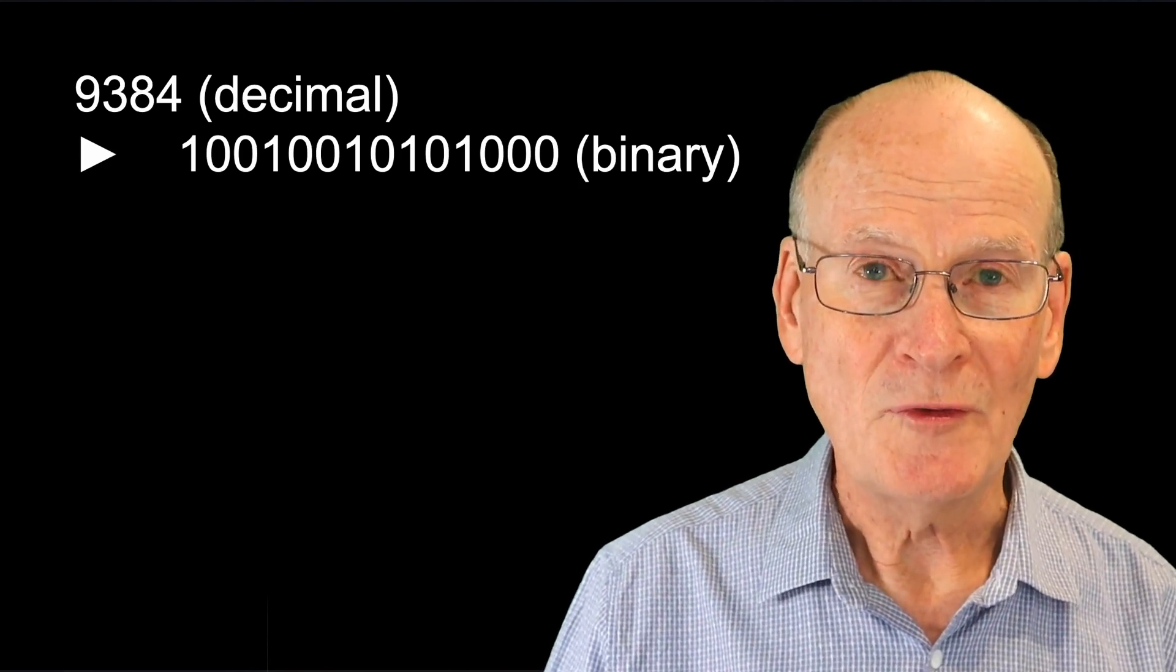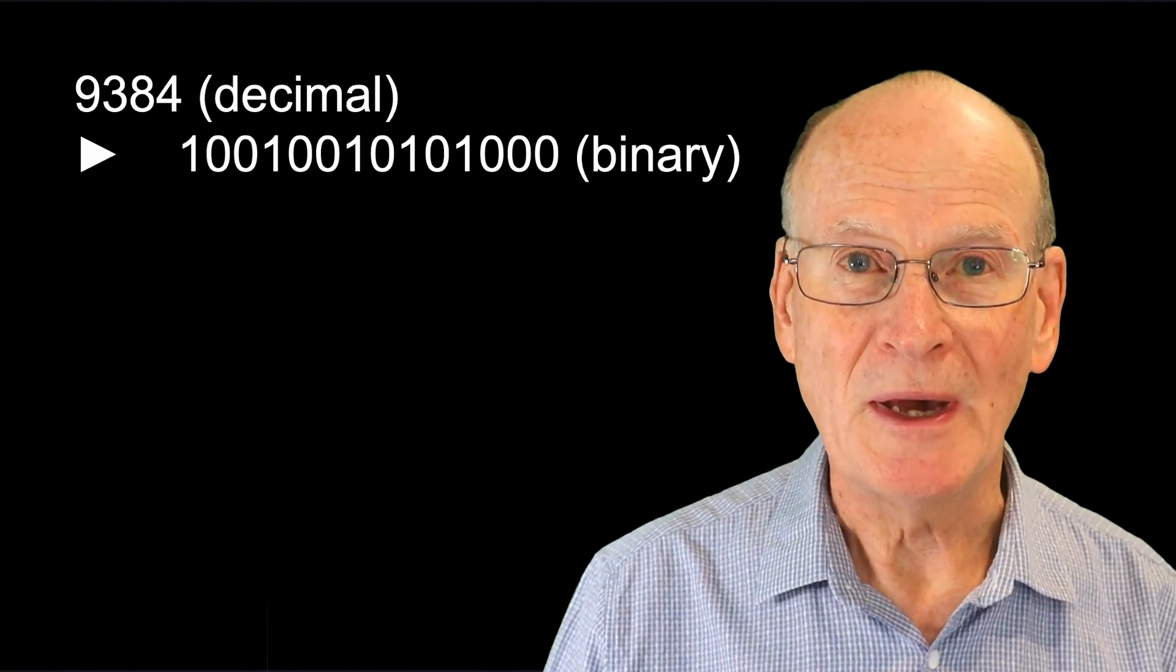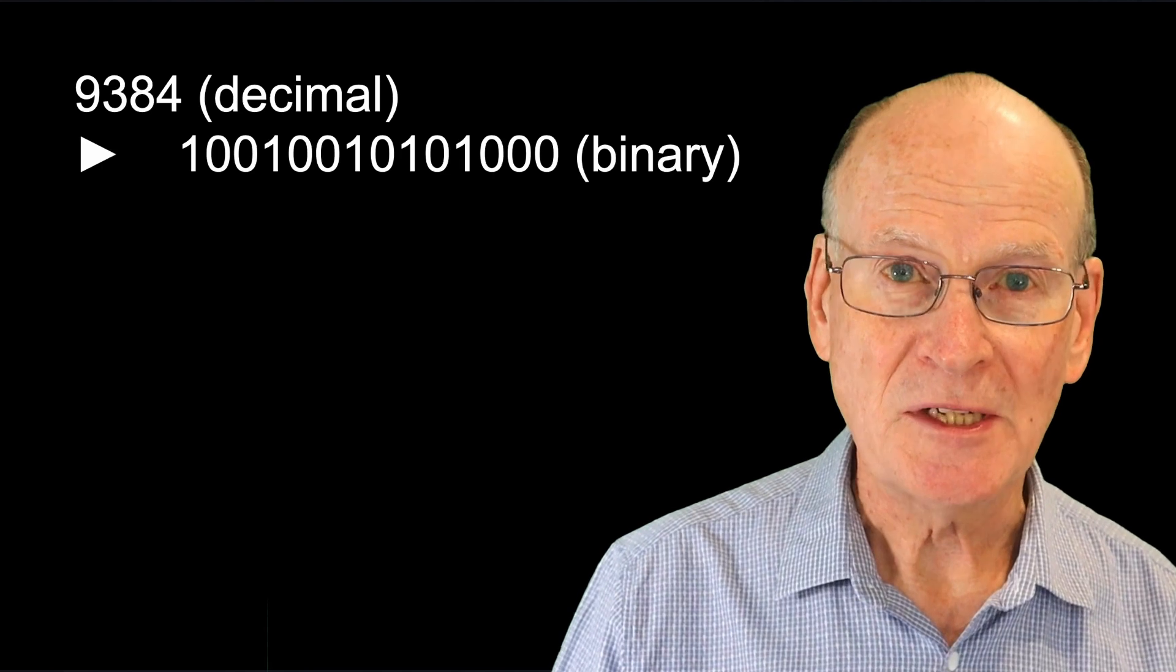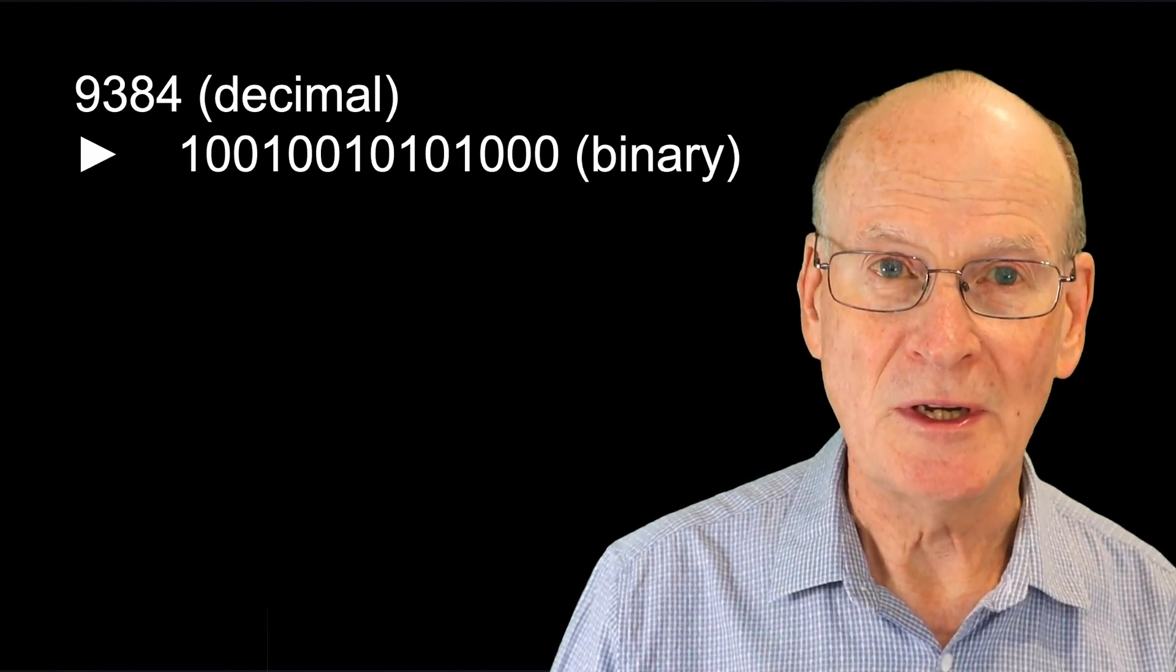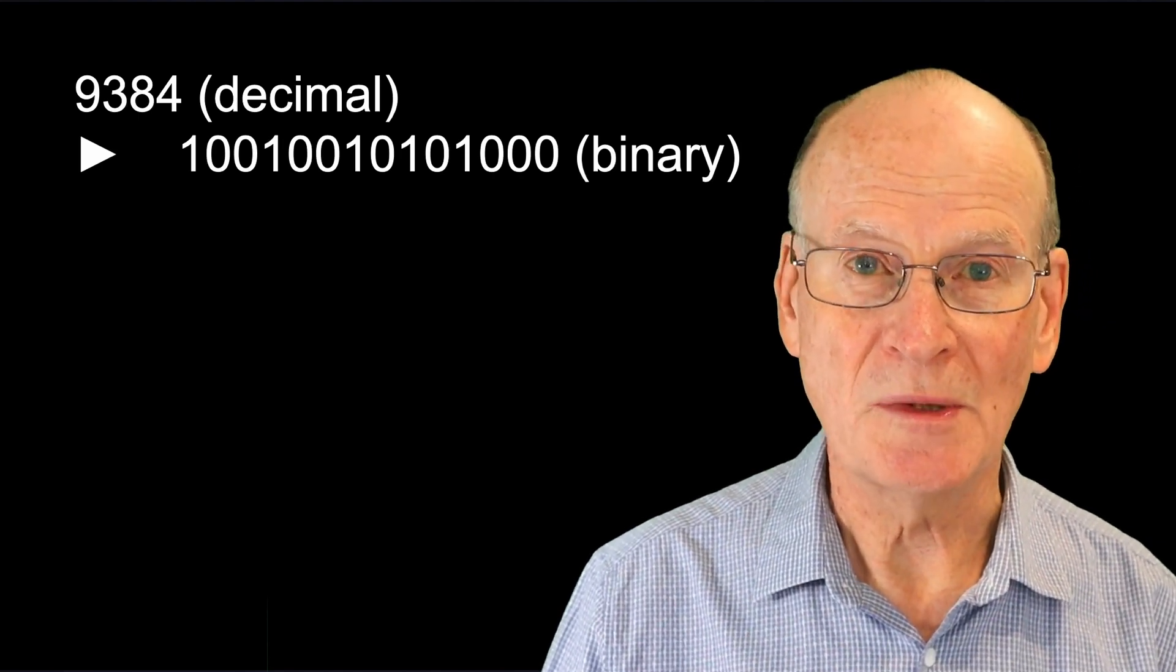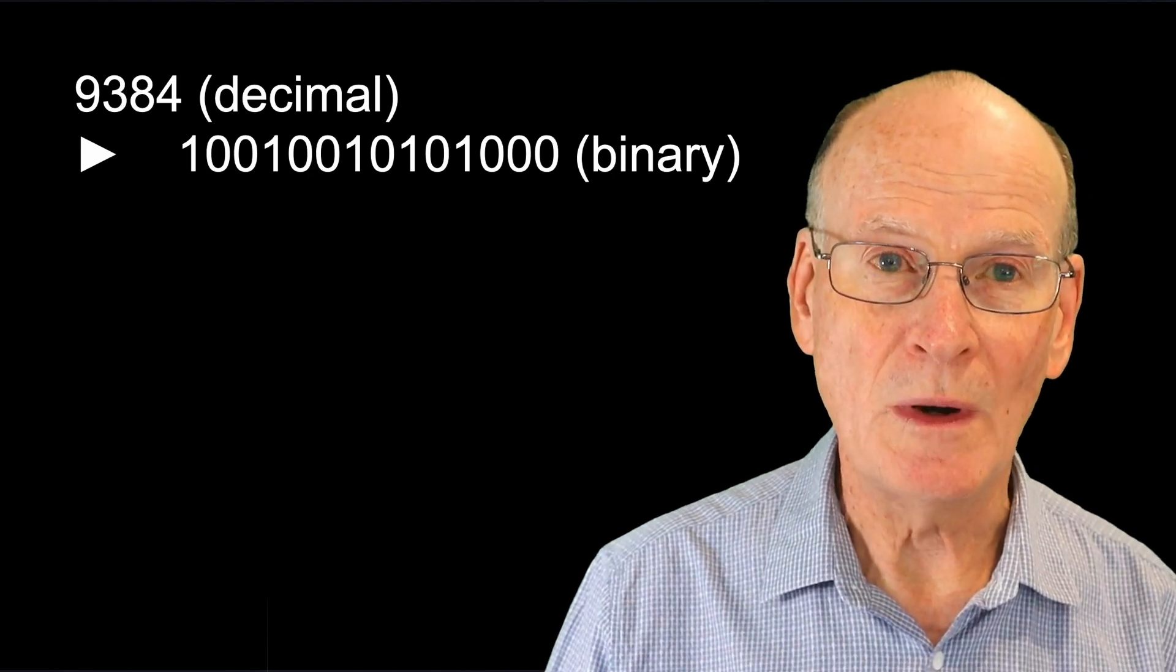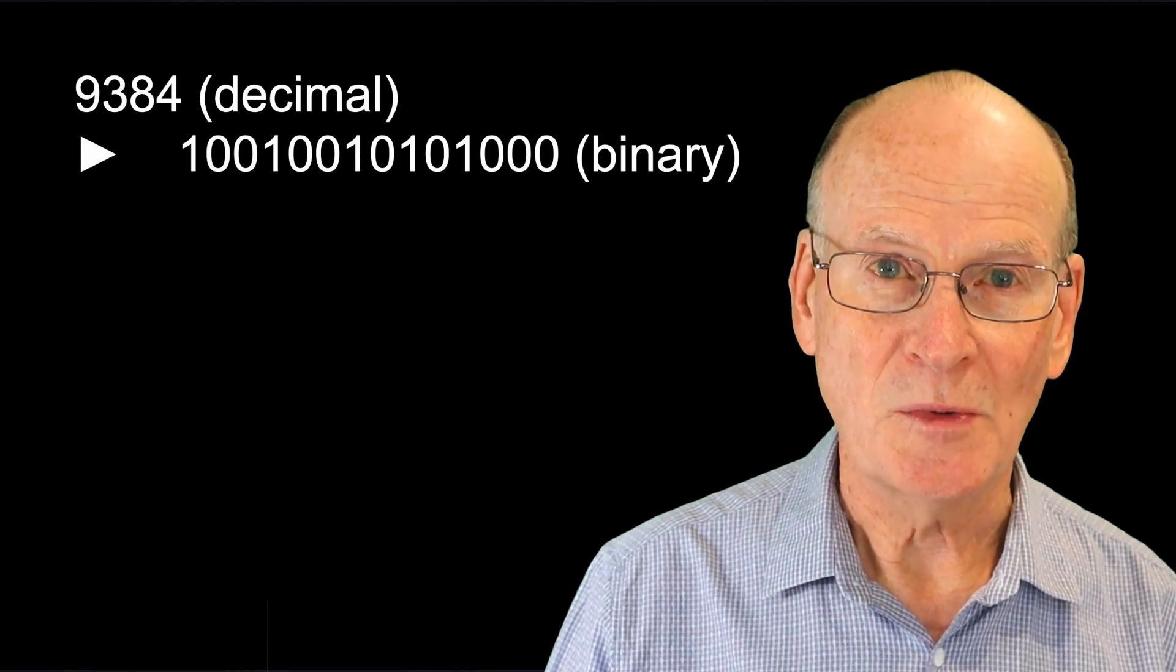But we can improve things if we write it down using a number for the base that's also a power of 2, and that makes it very easy to convert each symbol or digit into binary, and so convert the whole number. That way we can have the computer use the binary representation internally, but we can use an easier to read representation for humans.